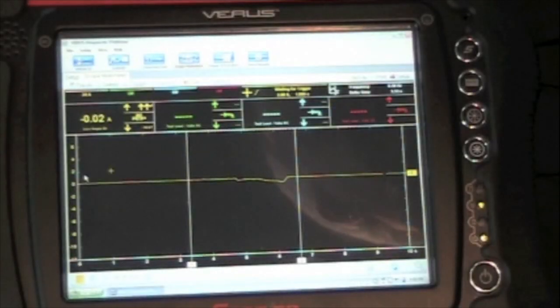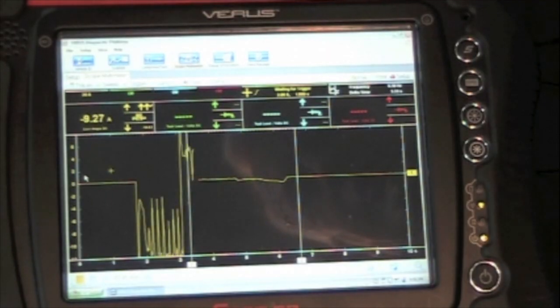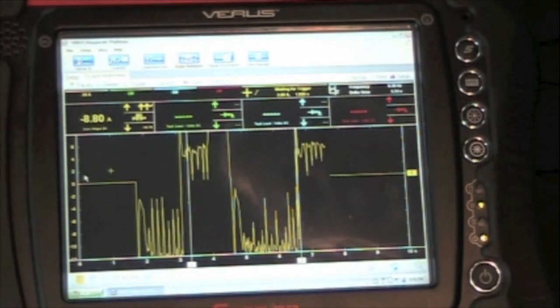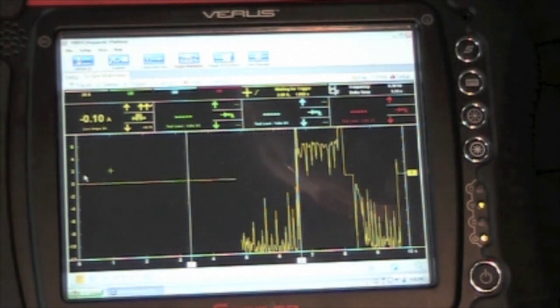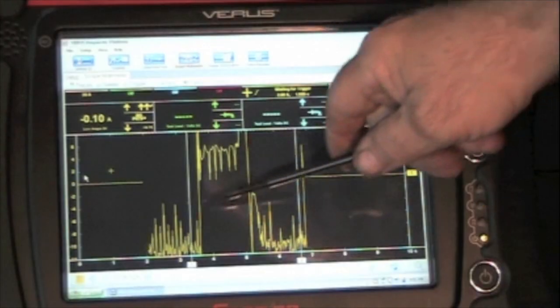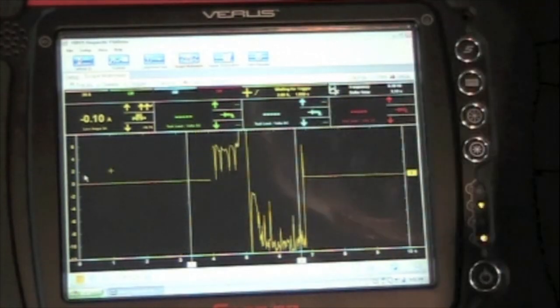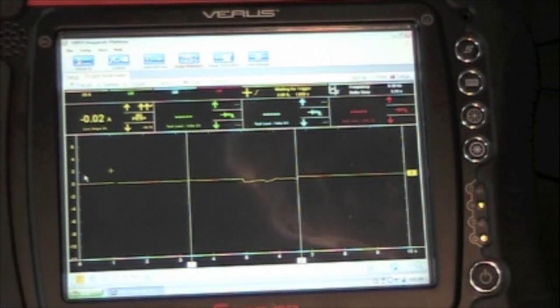Now I'm going to move my current probe over to the bad window motor. You can see quite a bit of difference between those patterns. You can see we've got a real bad signal on this motor. Now so you can compare, we're going back to the good motor.